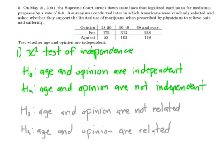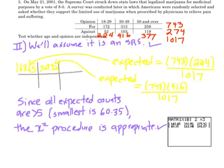A lot of you are saying it's really easy to figure out it's independence because the word independence is in the question. That won't always be the case — sometimes they'll use phrases like 'test whether age and opinion are related in some way.' So if it says the word independence, that's a nice clue, but that word won't always be there. We'll assume that this sample is an SRS — that's kind of our first check.